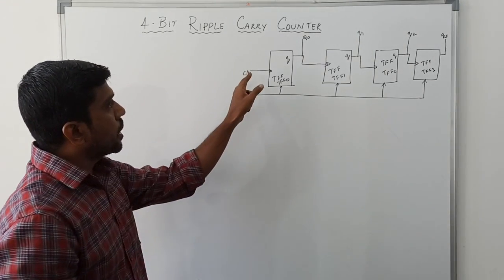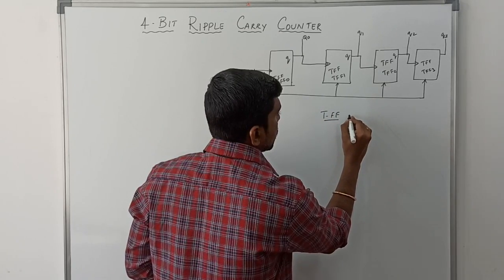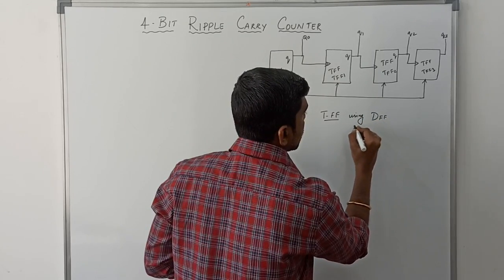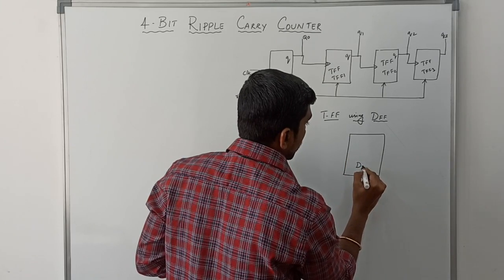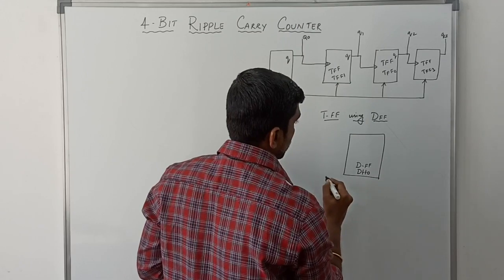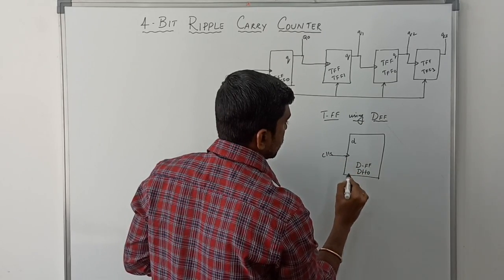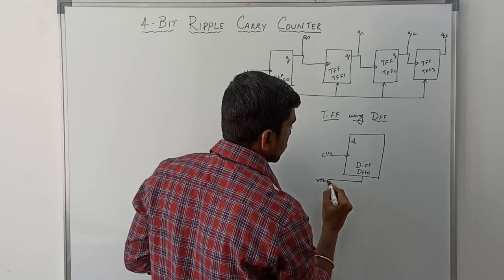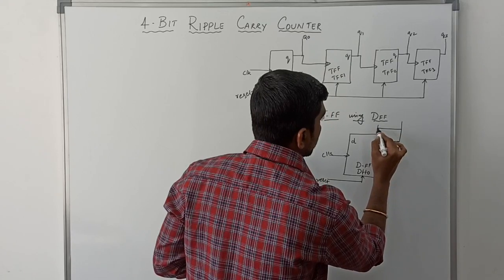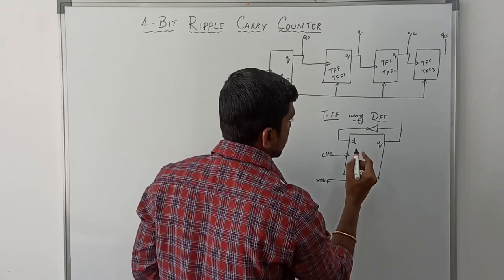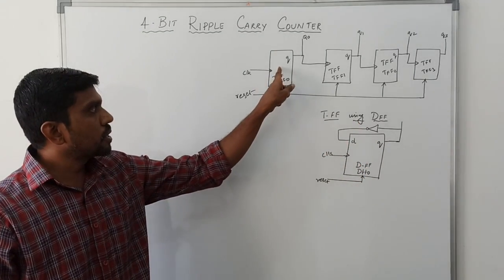Whenever you get the clock frequency, it will release the output values. Now the T flip-flop internal structure uses a D flip-flop. It consists of a D flip-flop with a data input D, a clock signal, and a reset input. The output is Q, and this Q is fed back to the input D through a NOT gate — an inverter gate. This is the T flip-flop structure using a D flip-flop.